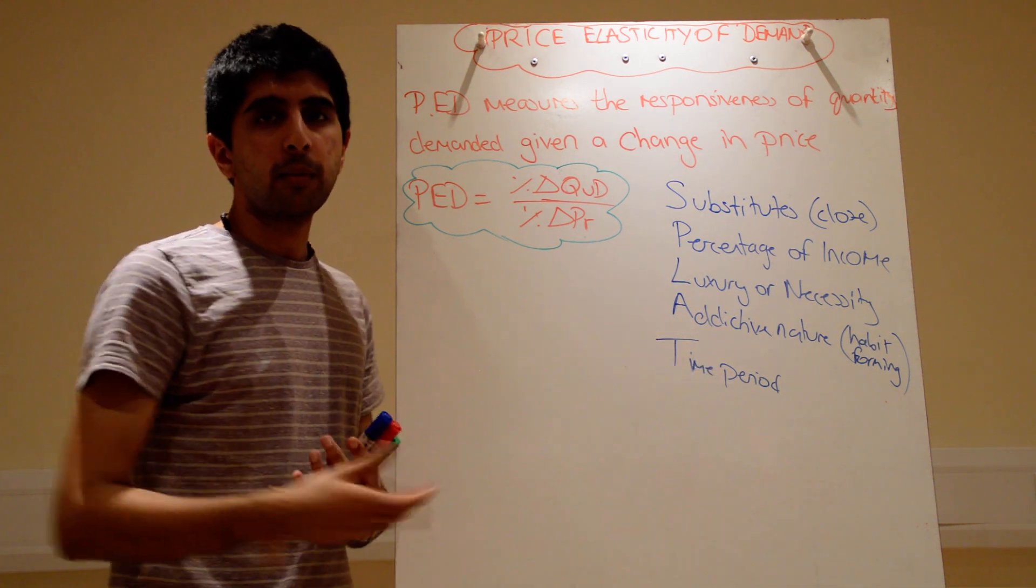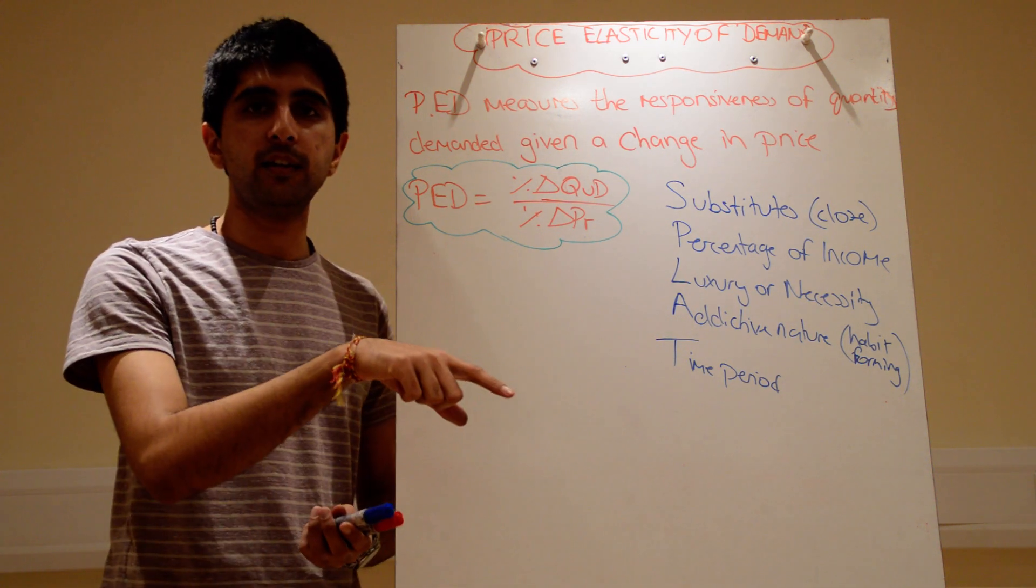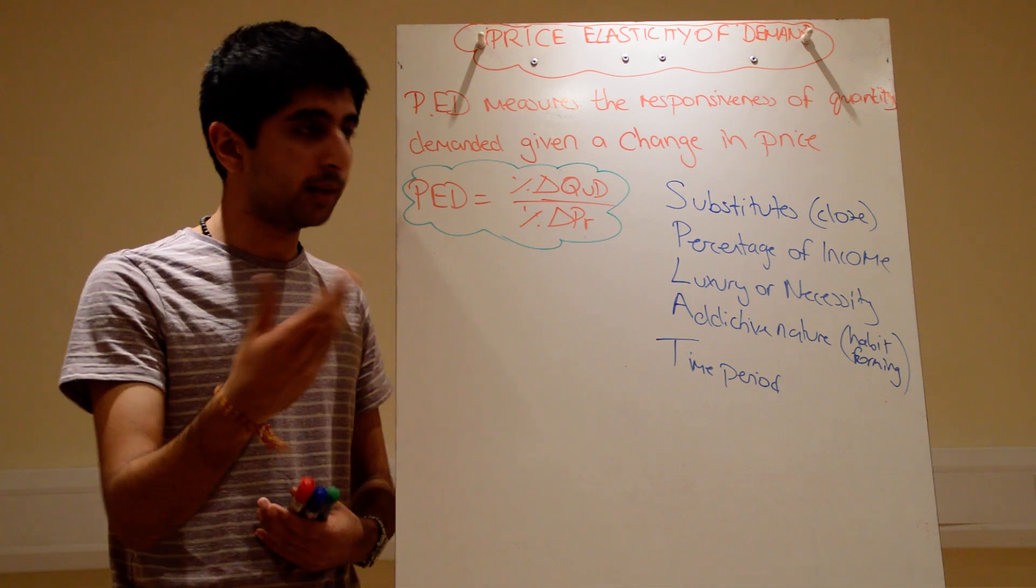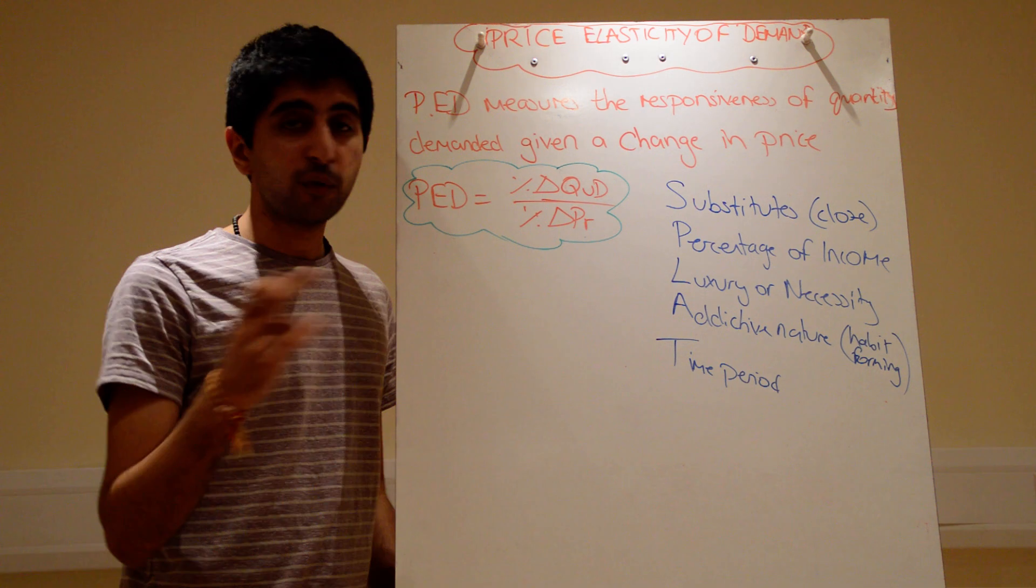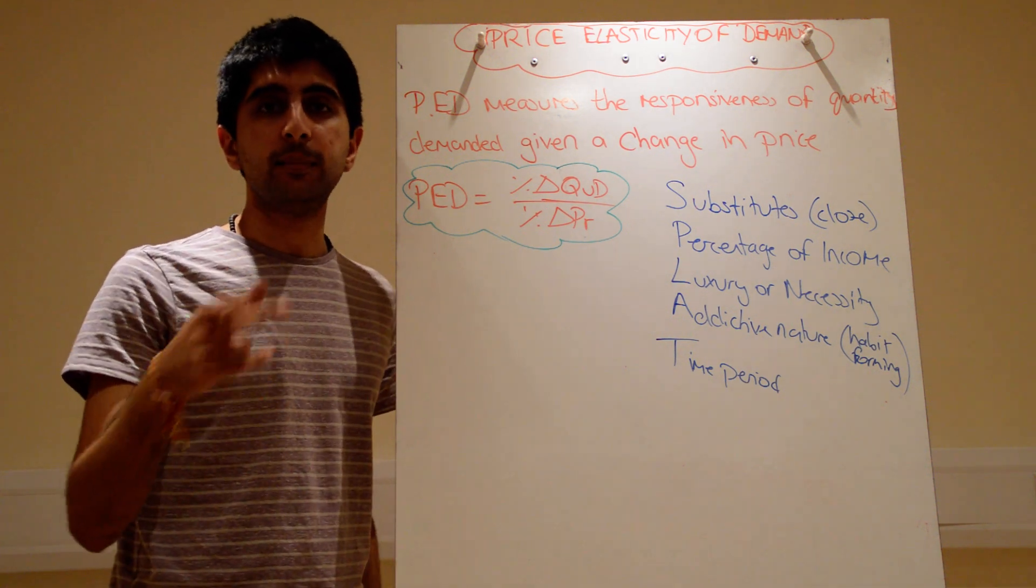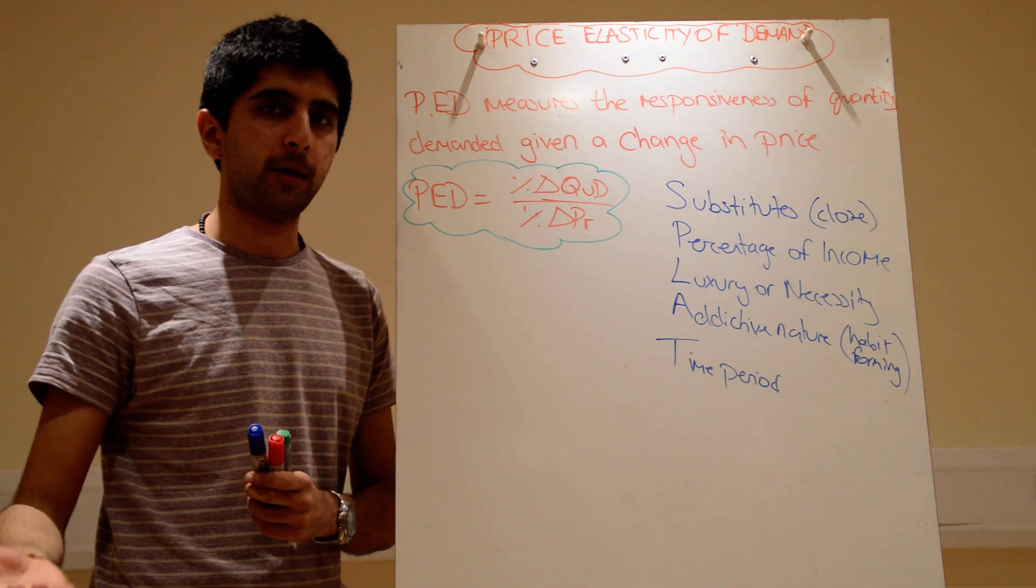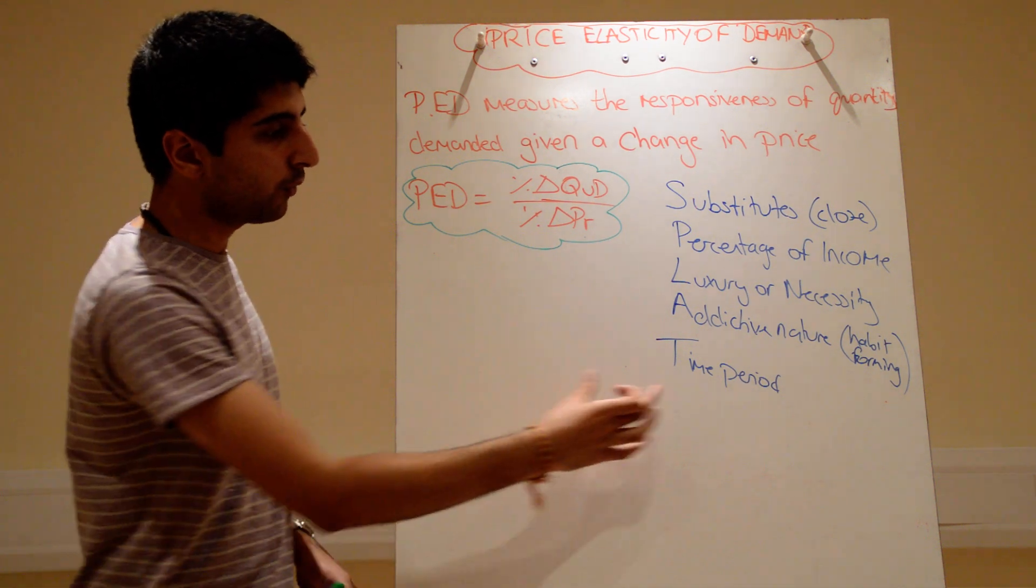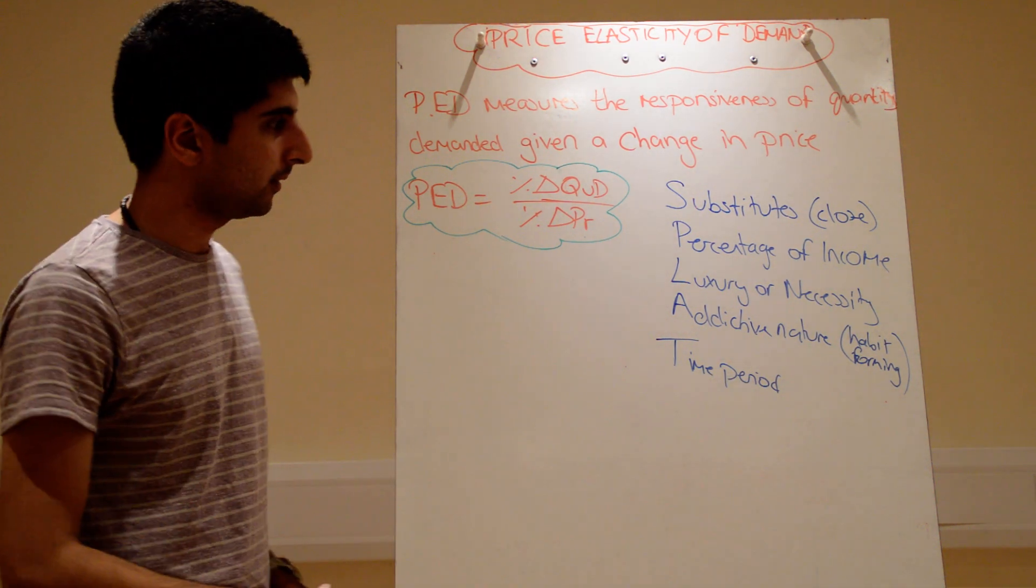But in the long run, maybe in a year's time, you might find other substitutes. You might find other alternatives as opposed to driving your car. Maybe you take the train now. Maybe you take the bus more. Or maybe you found other cars that are more fuel efficient. Or electricity powered cars. In any sense, your demand will become more elastic over time. You can respond better over time than in the short run. In the short run, your demand tends to be quite price inelastic. In the long run, more elastic.